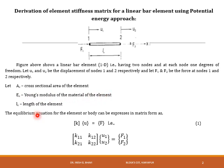The equilibrium equation for this element can be written in matrix form as k·u = f, where k is the element stiffness matrix for this linear bar element, u is the nodal displacement vector, and F is the nodal force vector. A vector is a matrix having either a single row or a single column.